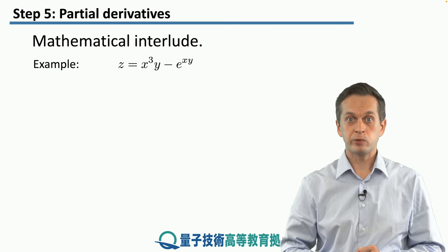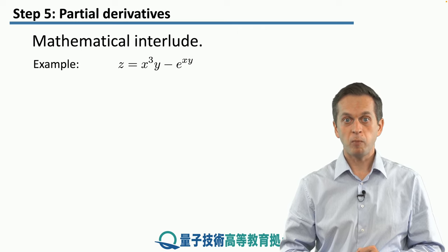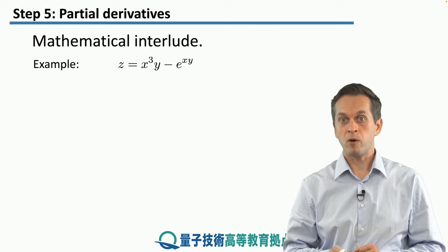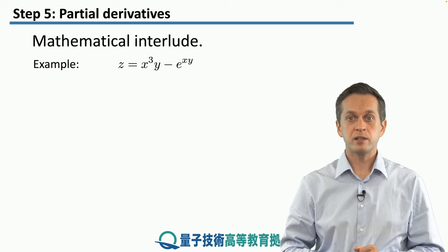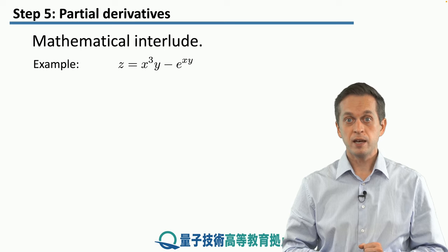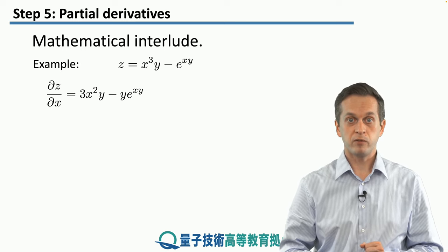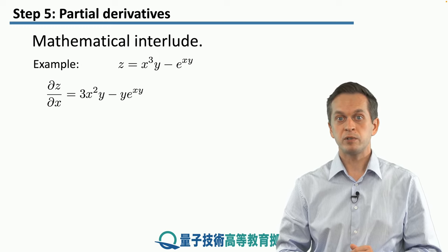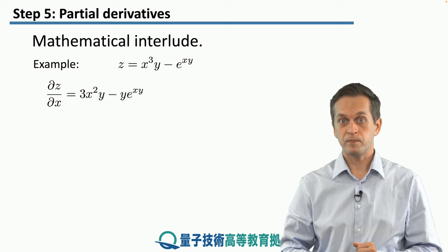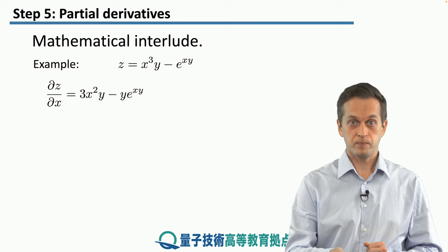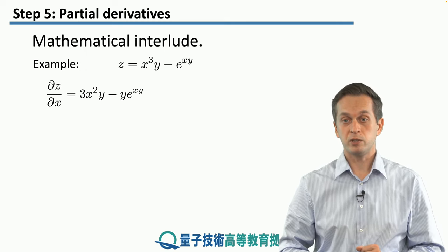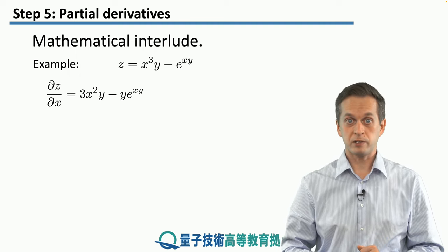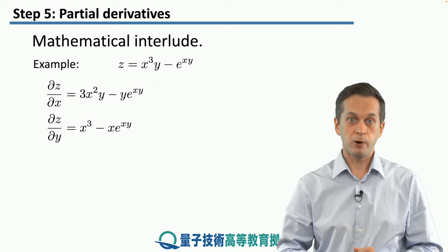Let's apply these rules to an example with a fairly complicated function: z equals x cubed times y minus e to the power of x times y. We can ask how this function varies with respect to x keeping y constant. So ∂z/∂x equals 3x² times y minus y times e to the power of xy — obtained by treating y as constant and differentiating only with respect to x. We can also find ∂z/∂y keeping x constant.